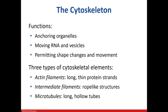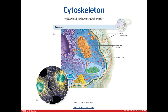The cytoskeleton of a eukaryote helps to make sure organelles don't float wherever they want. It transports RNA and allows for shape changing. It's composed of actin, which can also be seen in muscle contraction, intermediate filaments, and microtubules. You can see all three components: the actin, intermediate filaments, and the microtubules.